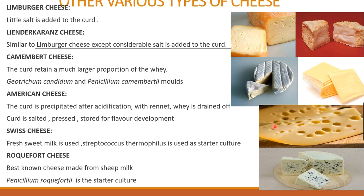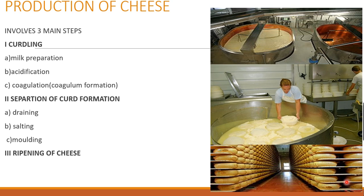To summarize the cheese varieties: Limburger, Linder Franzas, Camembert, American cheese, Swiss cheese (with characteristic holes from propionic acid bacteria), and Roquefort with its bluish-green color. Moving to production, the manufacture of cheese involves three main steps: curdling, separation of the curd, and ripening of the cheese.